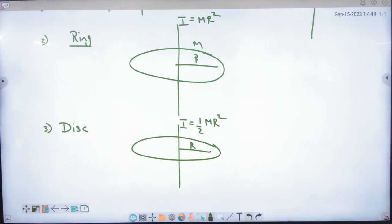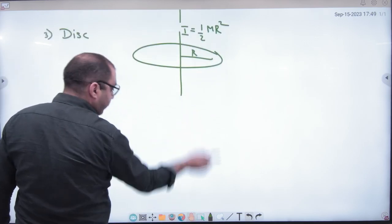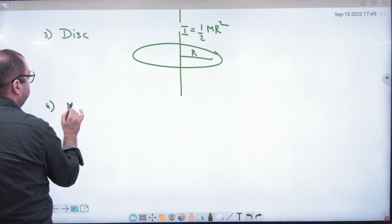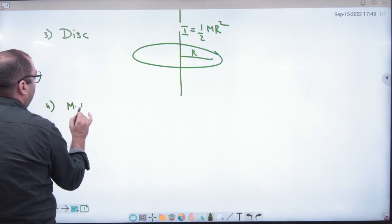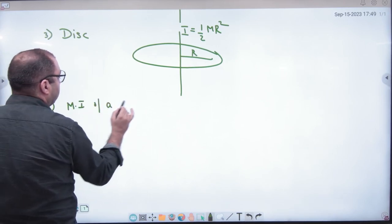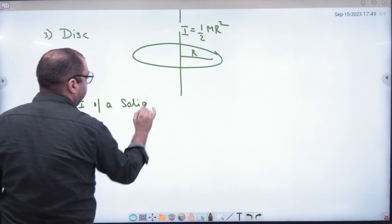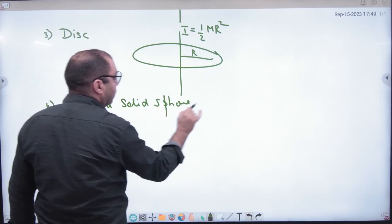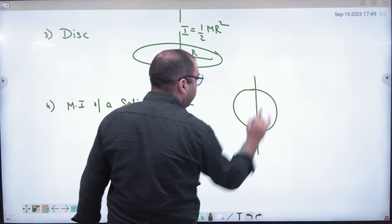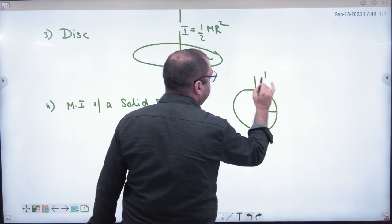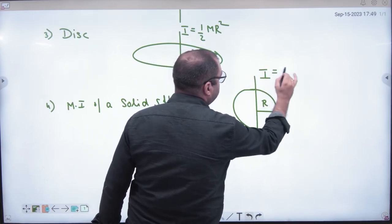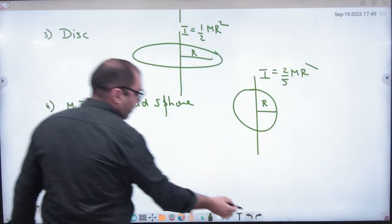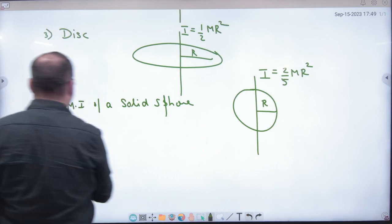Next is the moment of inertia of a solid sphere. For a solid sphere with radius r, the moment of inertia is I = (2/5)mr².